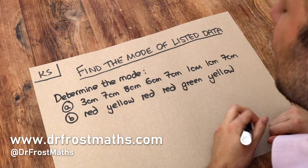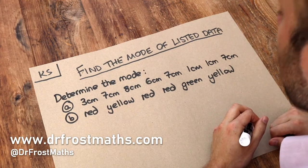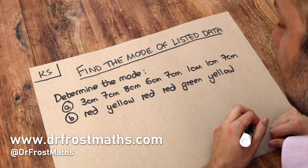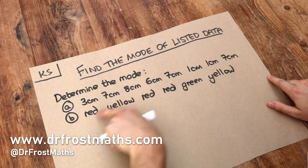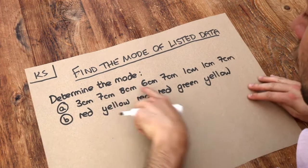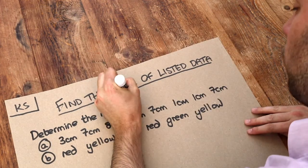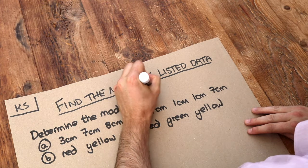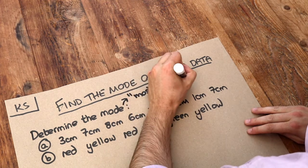Hello and welcome to this Dr. Frost Maths key skill video on finding the mode of listed data. So we've got these two different lists here and we want to find the mode of each. Now the mode just means the most common value and it really is as simple as that.